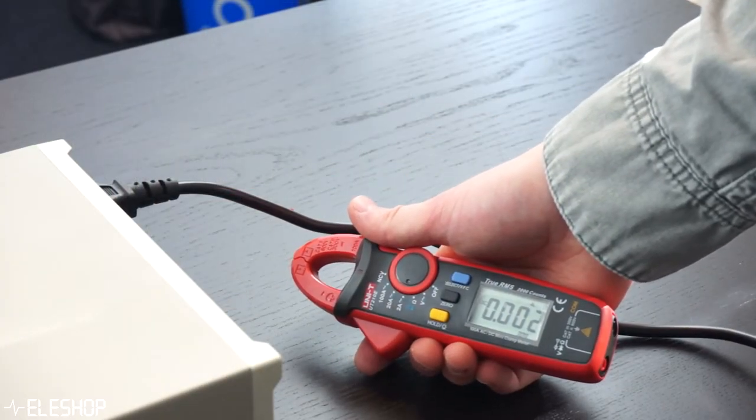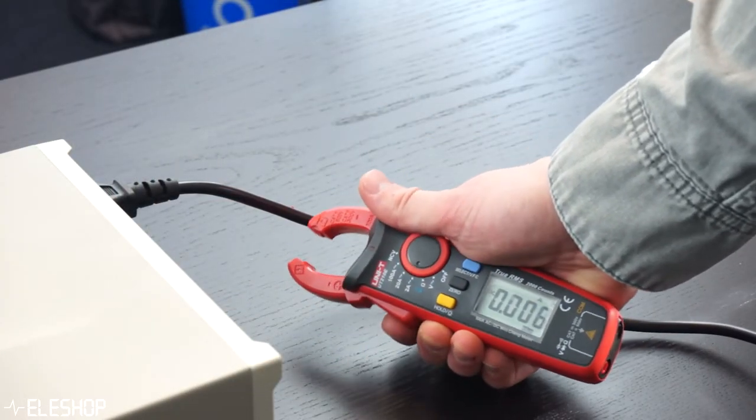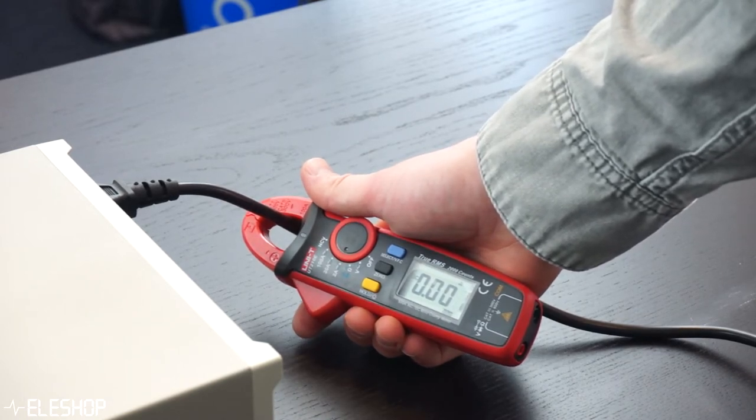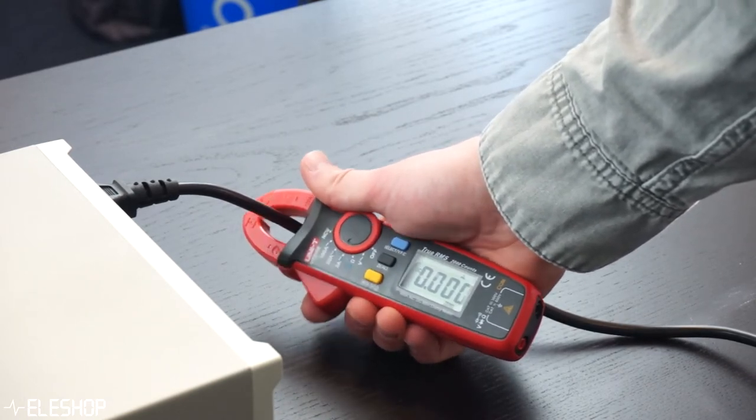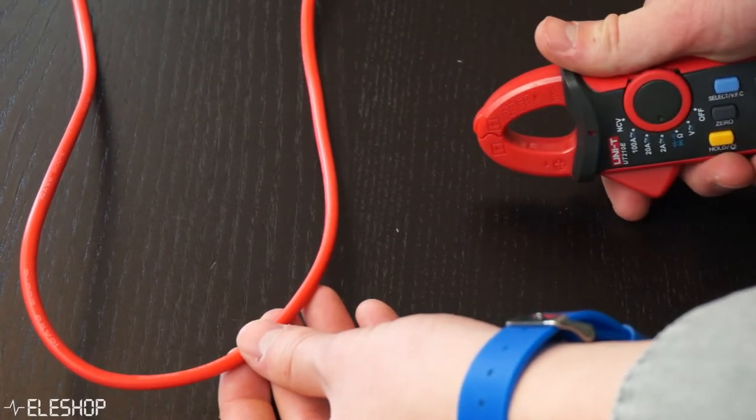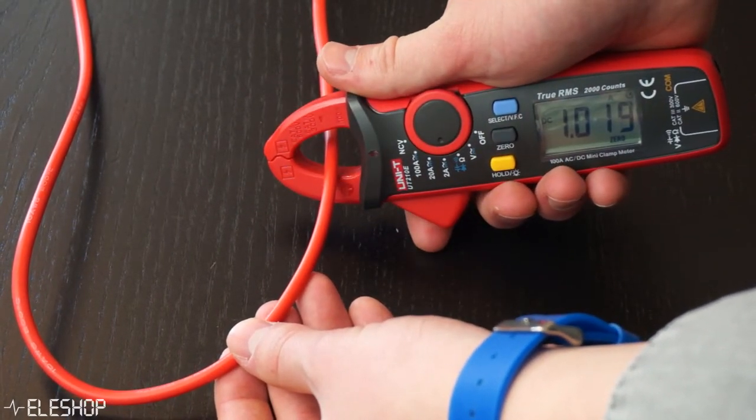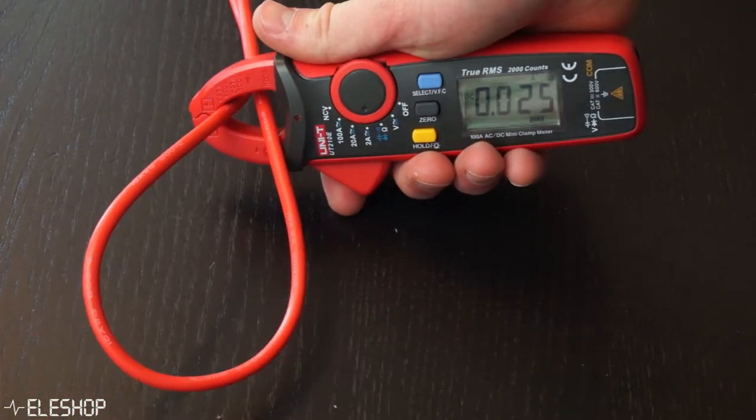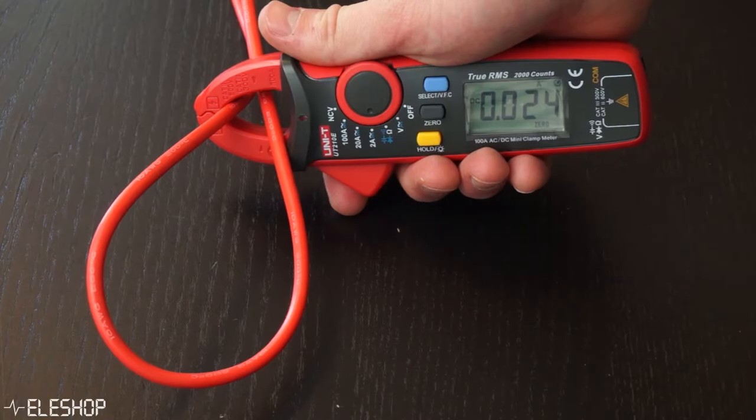For instance, when you're measuring the power cord of a device, you would think a current would show up on the display of the current clamp. But we overlook something here. Inside the power cord of a device, the current flows through the live wire towards the device and returns through the ground wire in opposite direction towards the power socket.